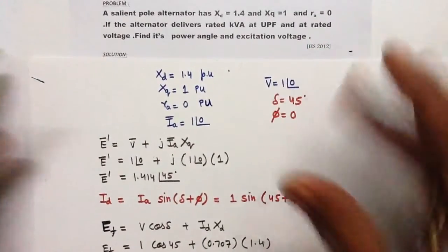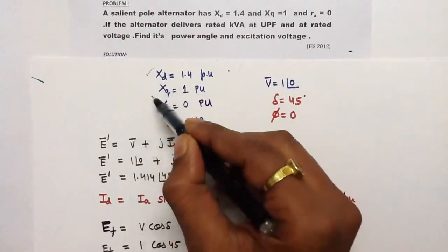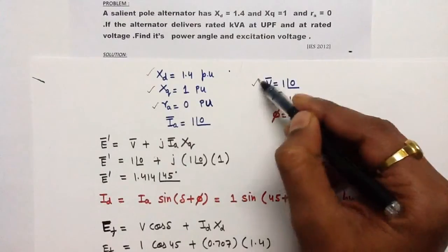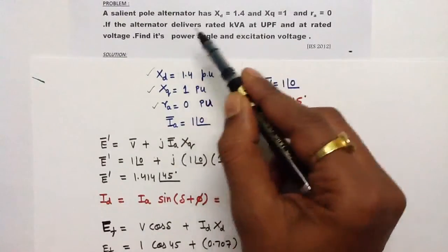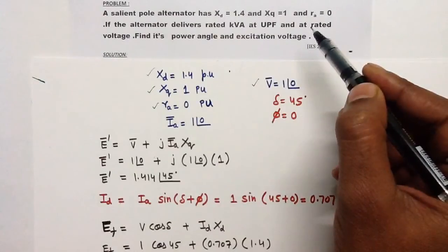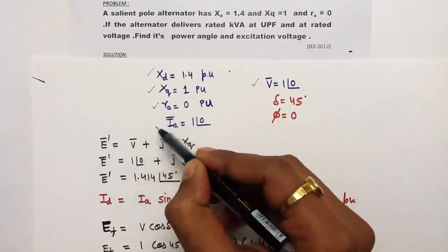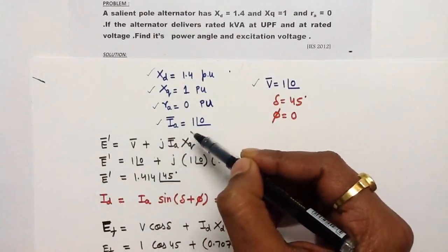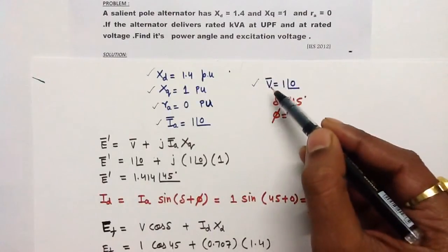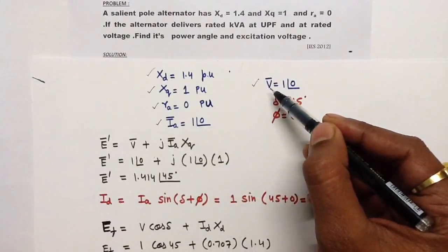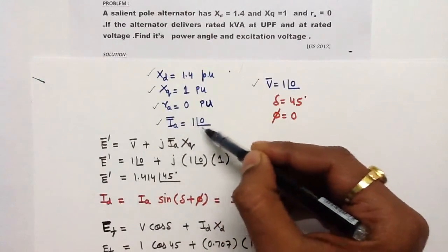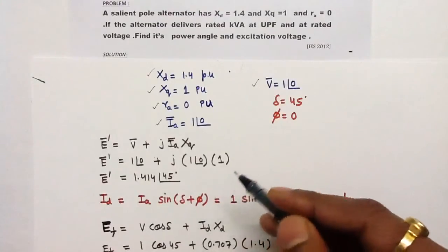According to this question, the values of xd, xq, and ra are given. I am taking the terminal voltage of the alternator as a reference. Since the alternator delivers rated kVA at rated voltage, the armature current magnitude will be 1 per unit. Because it operates at unity power factor, there will be no phase difference between ia and the terminal voltage, so the angle is 0.